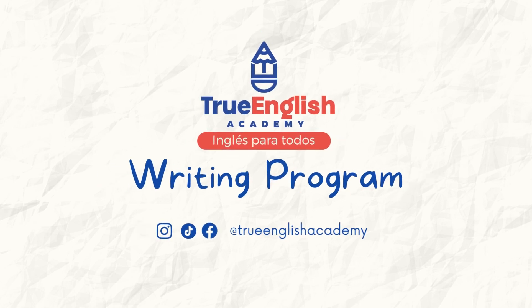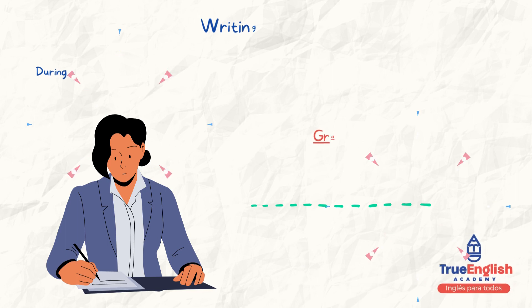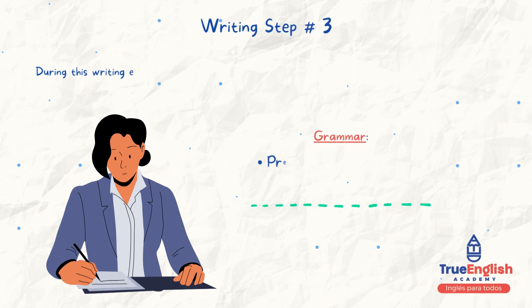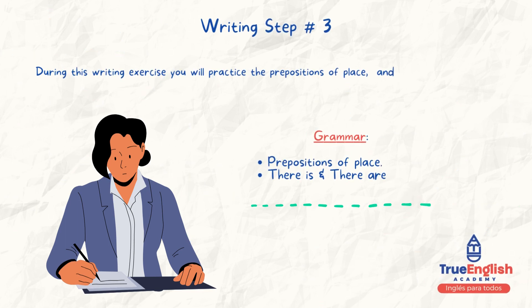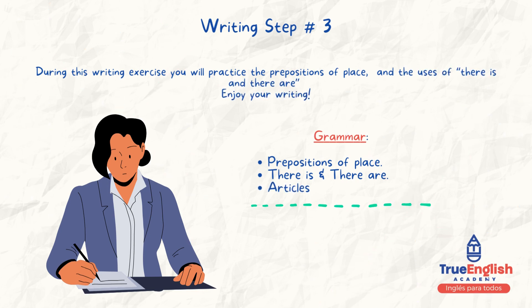True English Academy Writing Program. Writing Number 3. During this writing exercise you will practice the prepositions of place and the uses of there is and there are. Enjoy your writing!